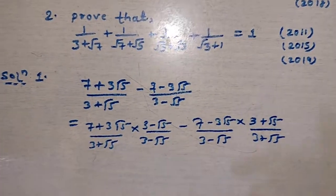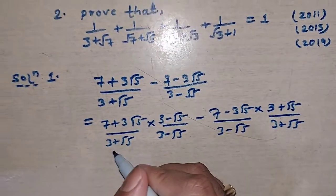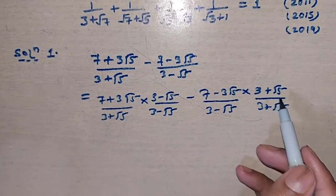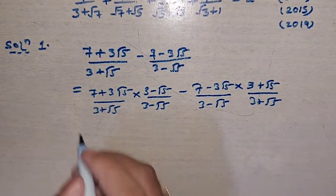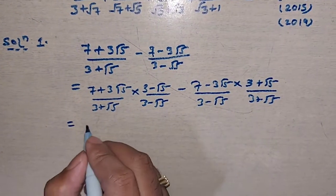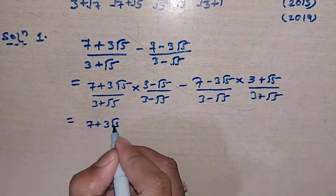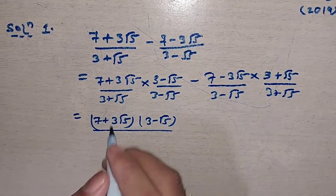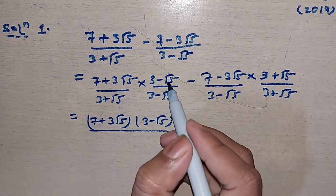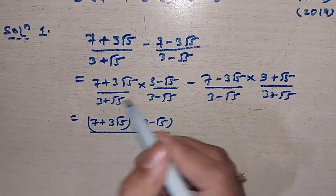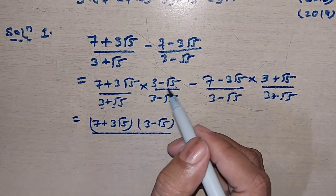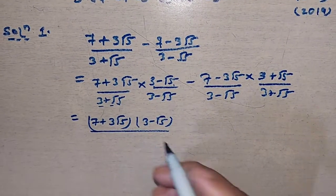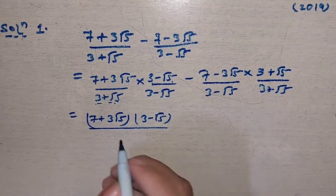As we told in the previous videos, if the denominator is in positive form then we have to take the negative form, and if it is negative then we have to take the positive form. Now we multiply using cross multiplication. Using the identity (a + b)(a - b) = a² - b², the denominator becomes 9 minus 5.